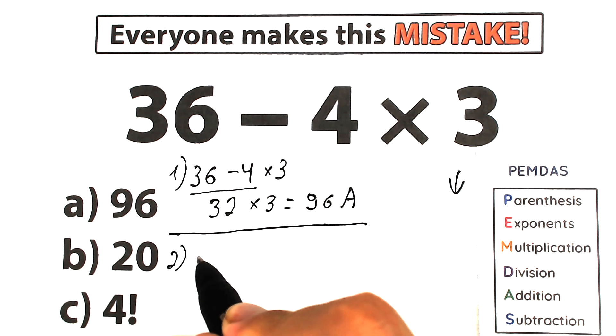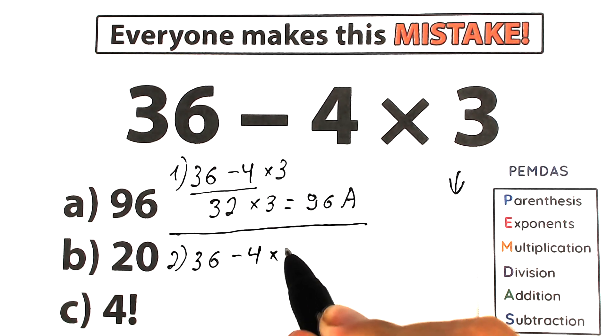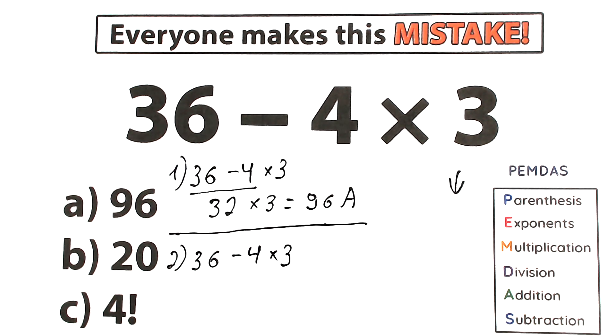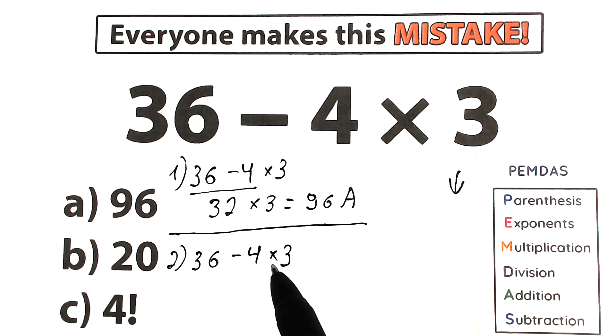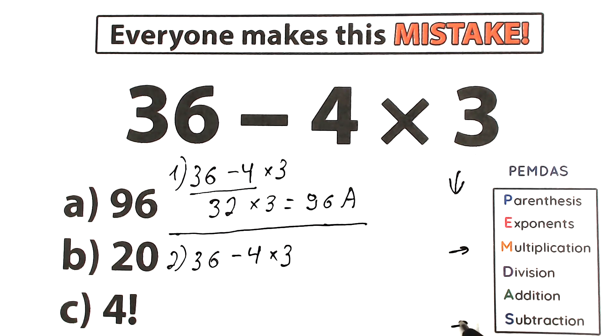So what do we have? We have our challenge 36 minus 4 times 3. Let's scan what elements do we have. We have multiplication, we have subtraction. Multiplication is right here, subtraction is right here.